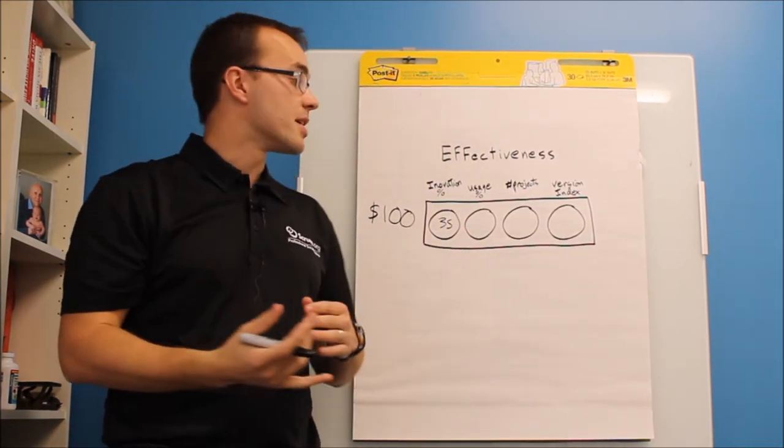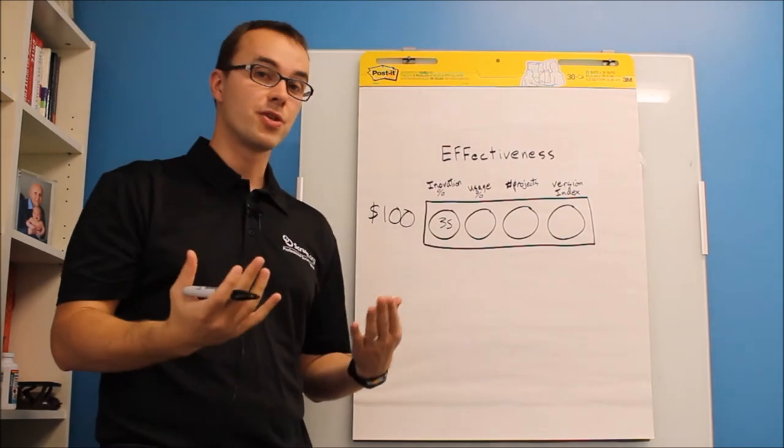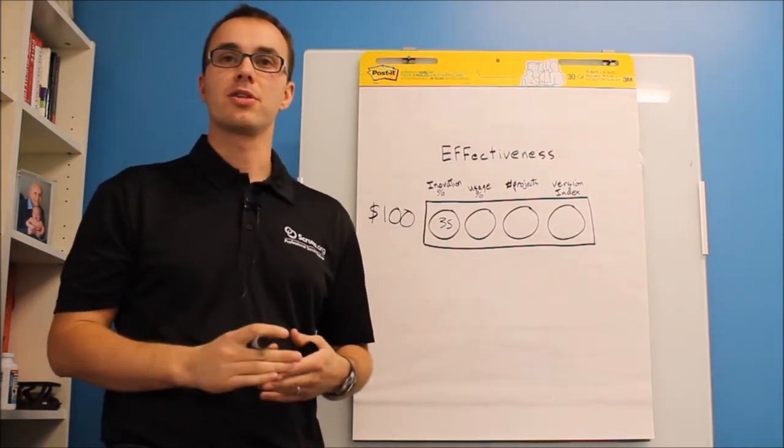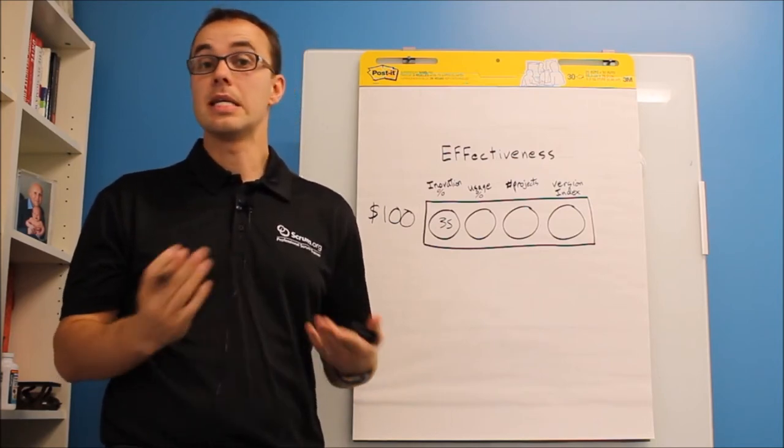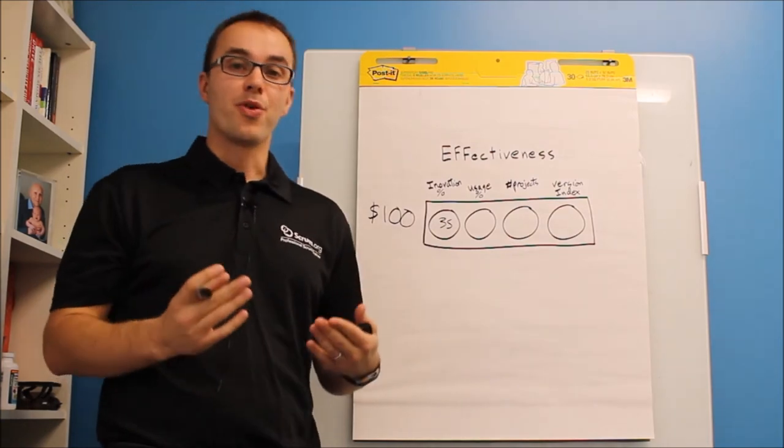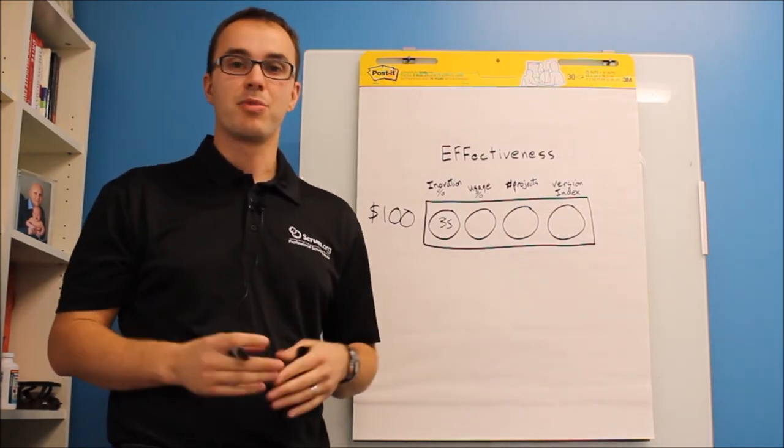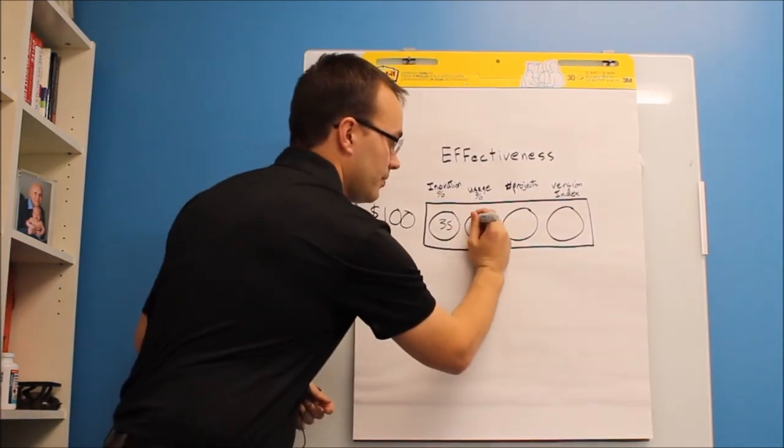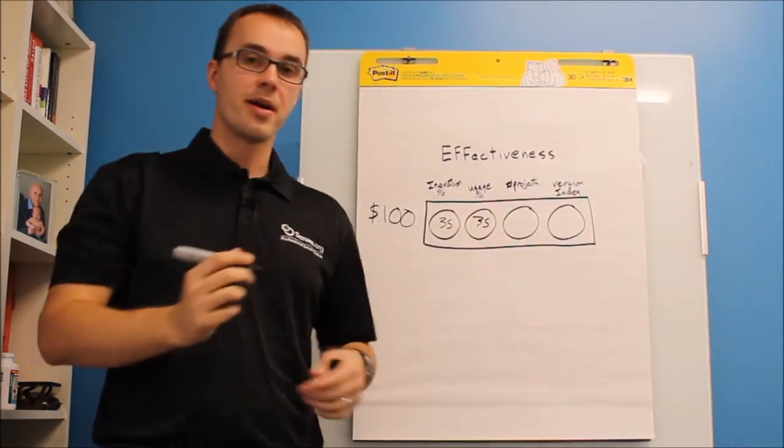So then the next one would be usage rate. So for every feature you add in your product, what percentage of users are actually using it? How effective are you at identifying what they need? The research shows that only about 30 to 35% of features are actually used by the end user. So you do another 30 there, 35.